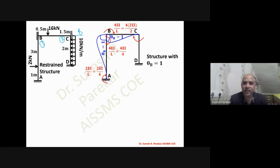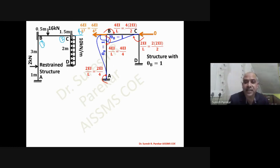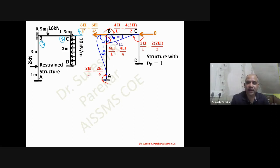Applying θB = 1: moments for BA and BC are computed. Unlike Problem 3 which had only column AB, here both columns AB and CD sway, so both reactions RB and RC must be added to get S31. S11 is the sum of the two stiffness contributions.